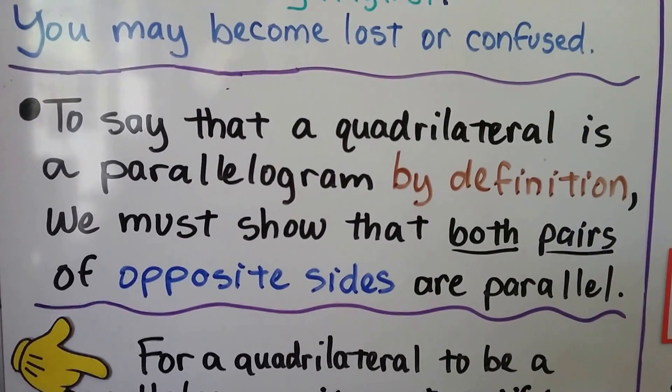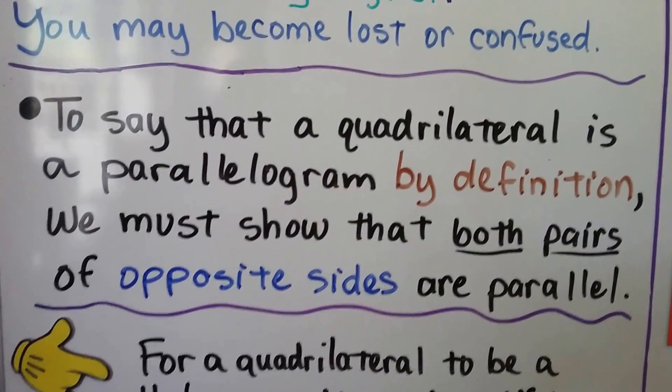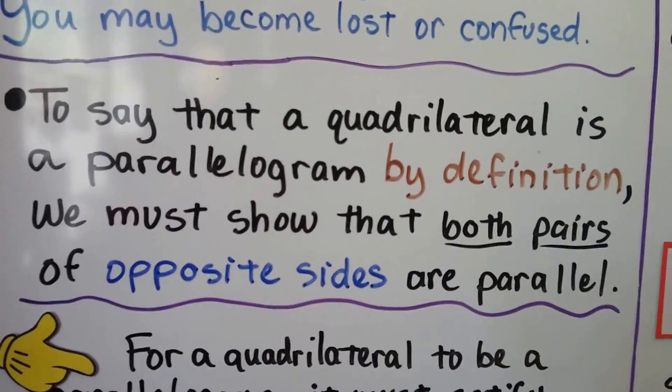To say that a quadrilateral is a parallelogram by definition, we must show that both pairs of opposite sides are parallel.